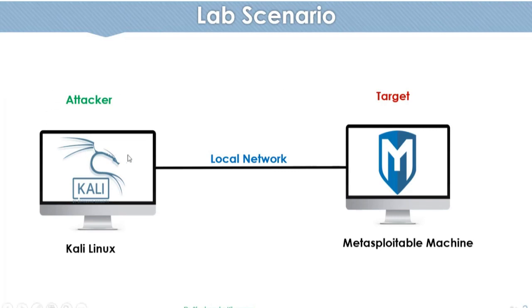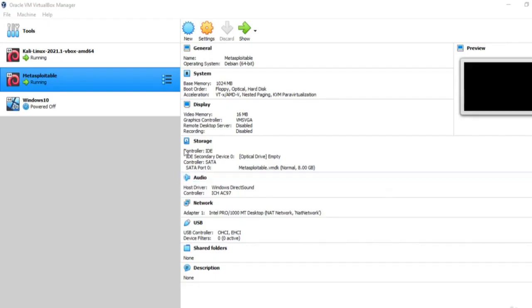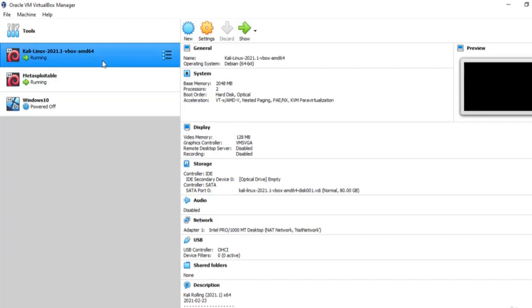یہ ہمارے lab کا scenario ہے: attacker machine ہمارے پاس Kali Linux ہے اور target یا victim machine ہمارے پاس Metasploitable ہے، جو local network کے اوپر connected ہے۔ اس lab scenario کو use کرتے ہوئے ہم لوگ attack کریں گے اور کوشش کریں گے کہ SMTP کے اندر جو vulnerability ہے اس کا فائدہ لیتے ہوئے machine کو hack کریں۔